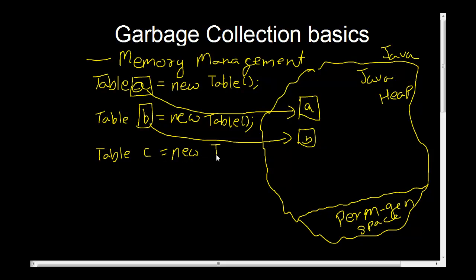Let's create a third table object called C. Again, we're creating a new table object as you can see by this new keyword.